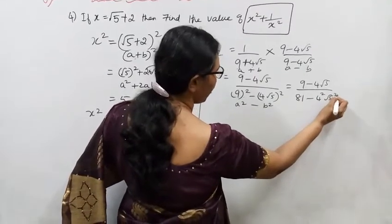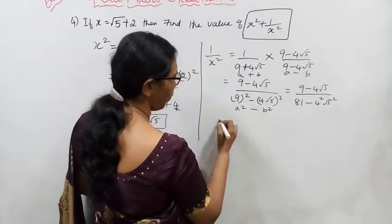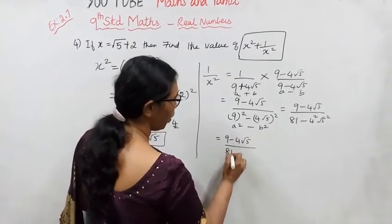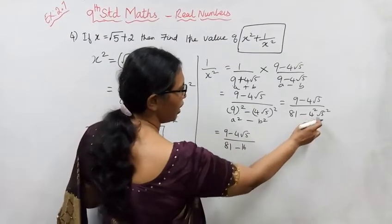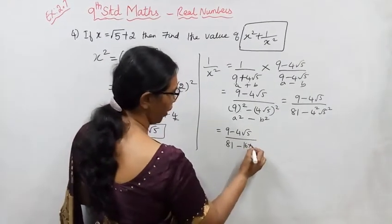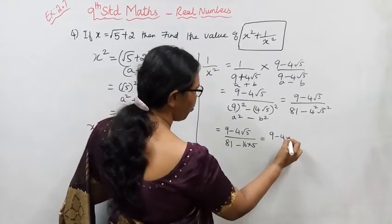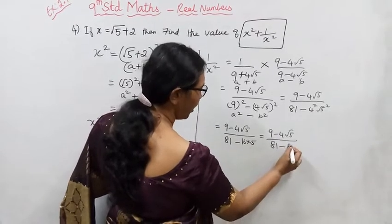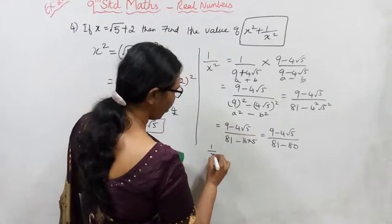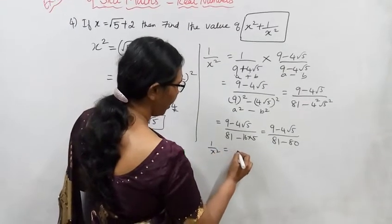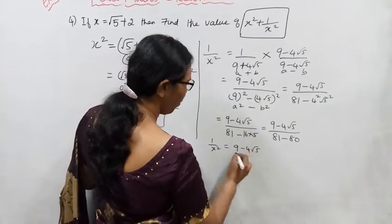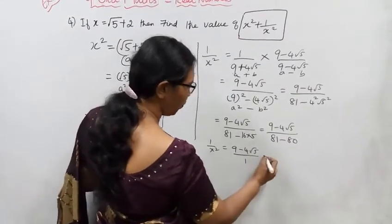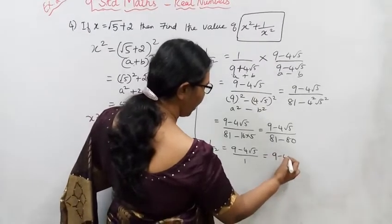This gives us (9 - 4√5) divided by (81 - 16×5). Since 16×5 = 80, we get (9 - 4√5)/(81 - 80) = (9 - 4√5)/1.